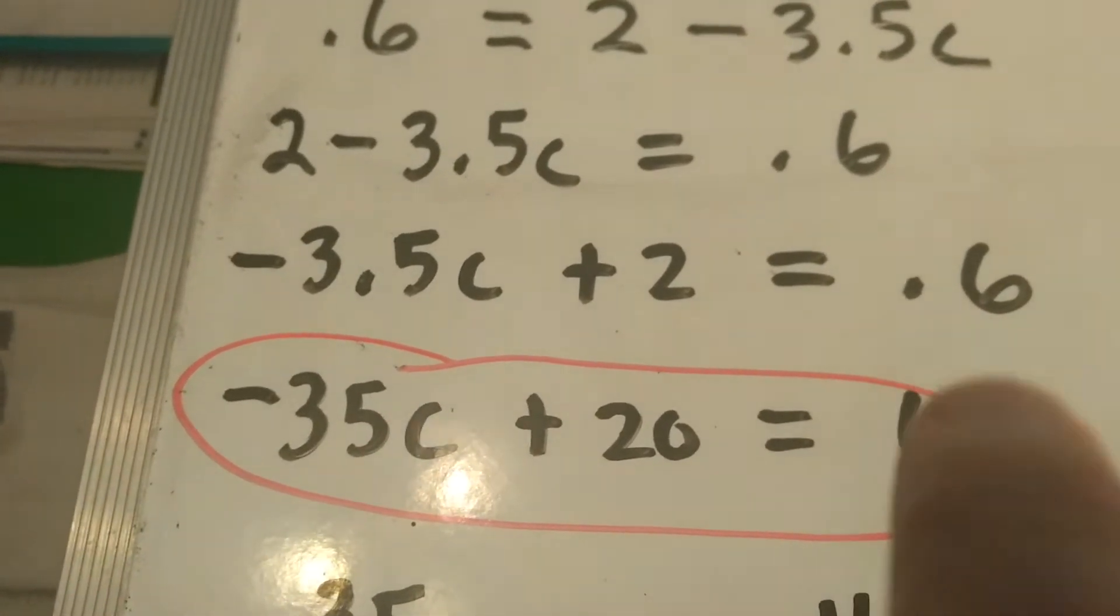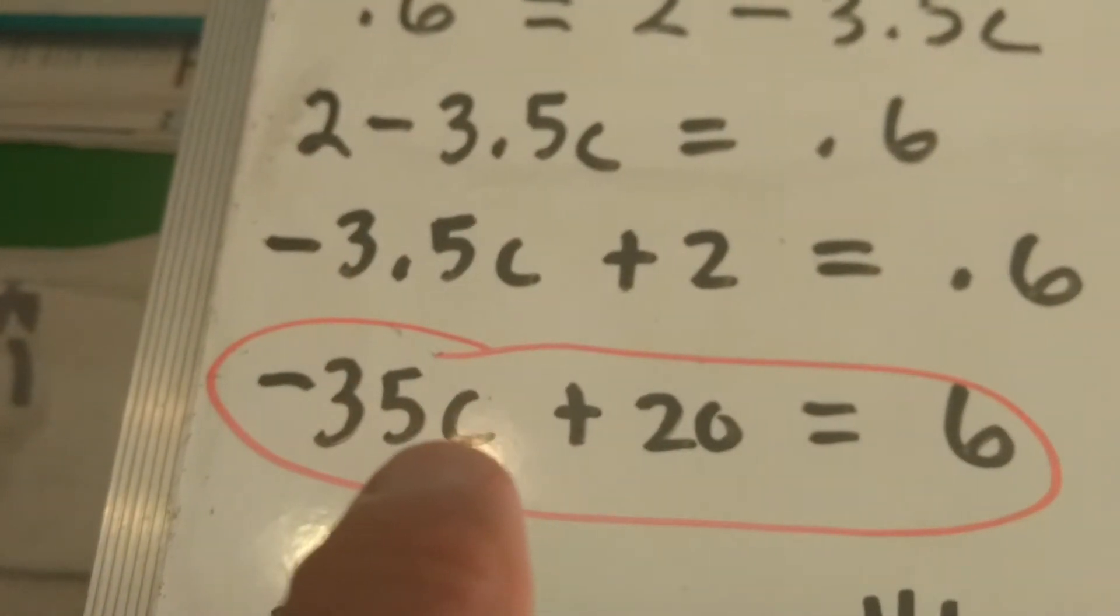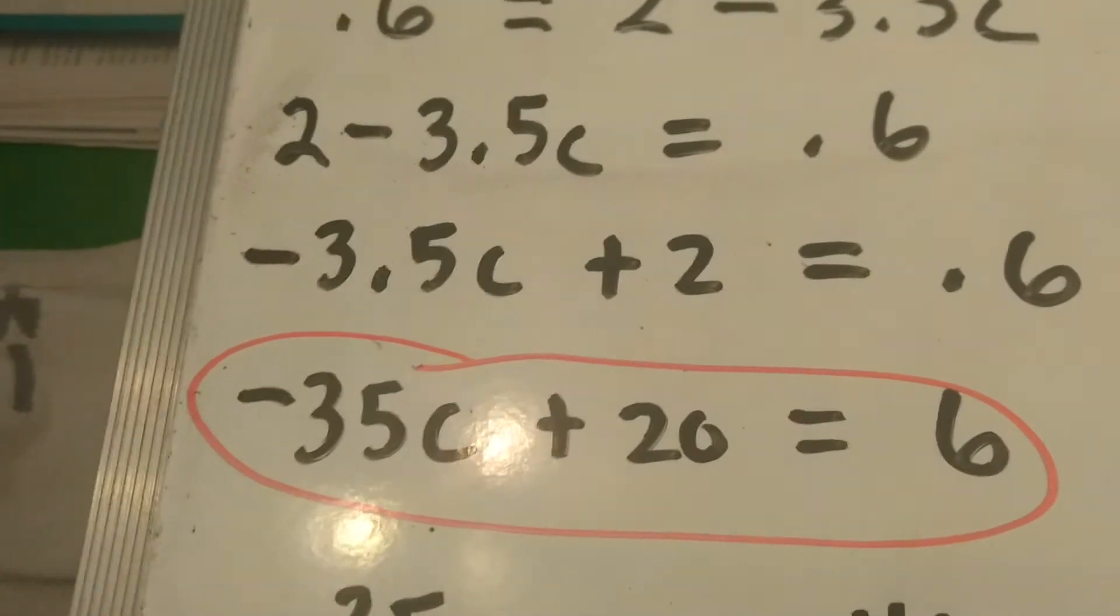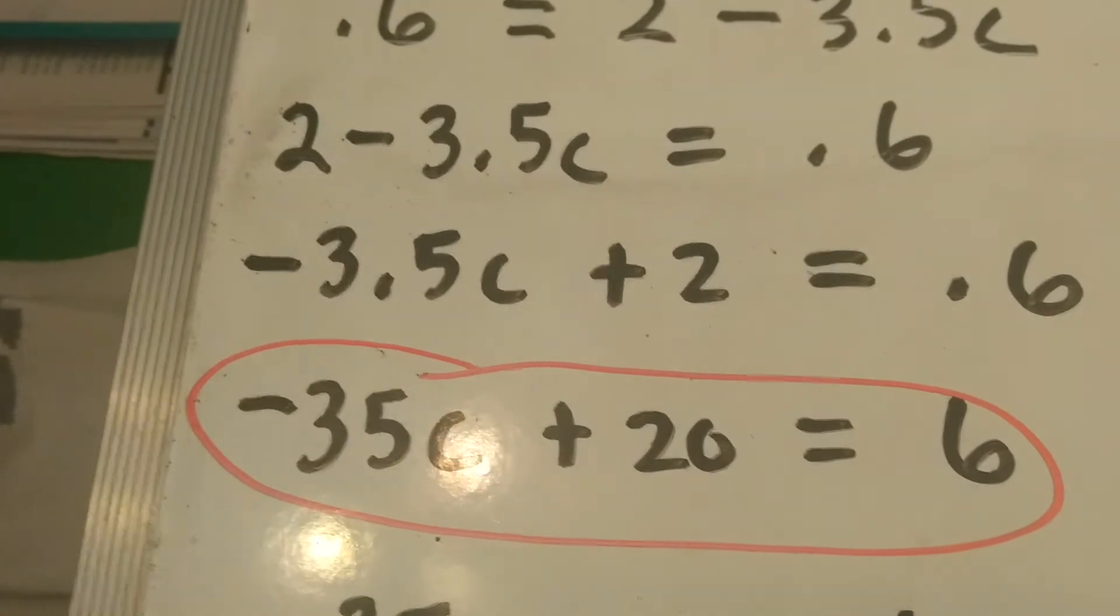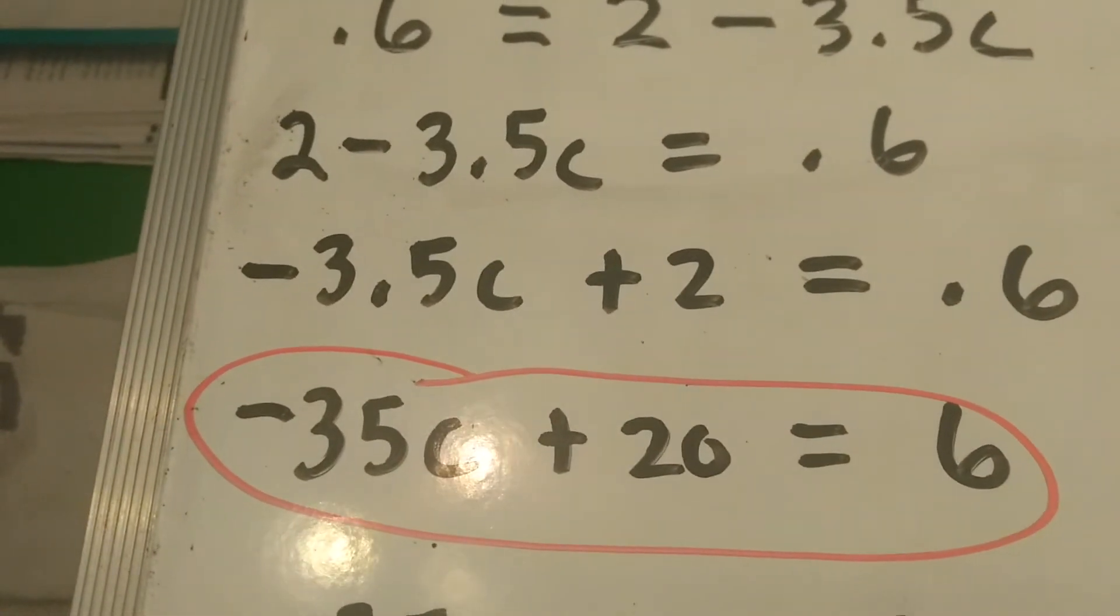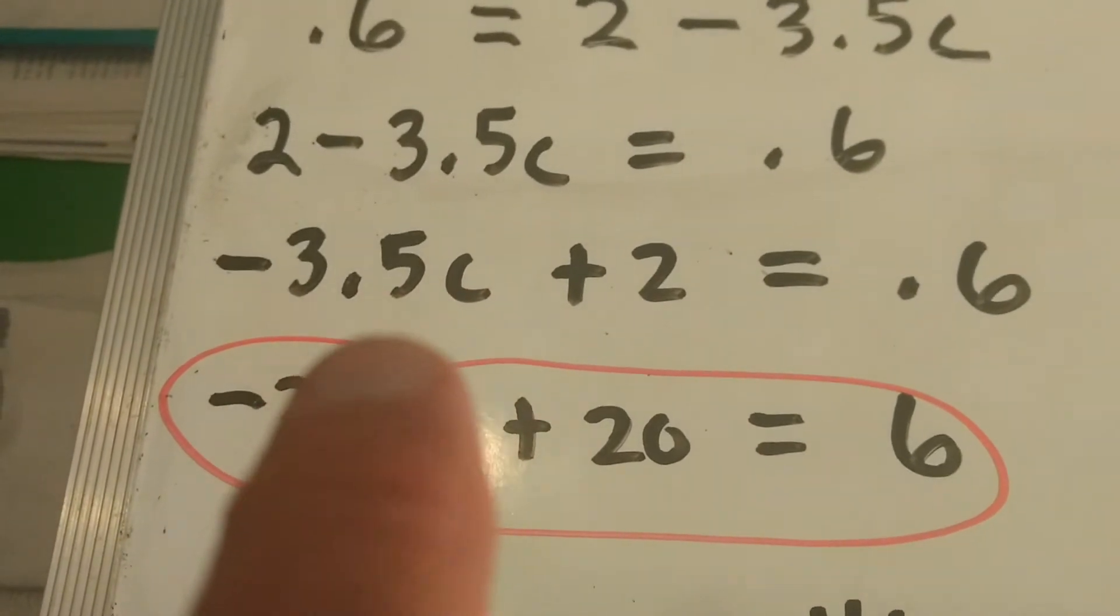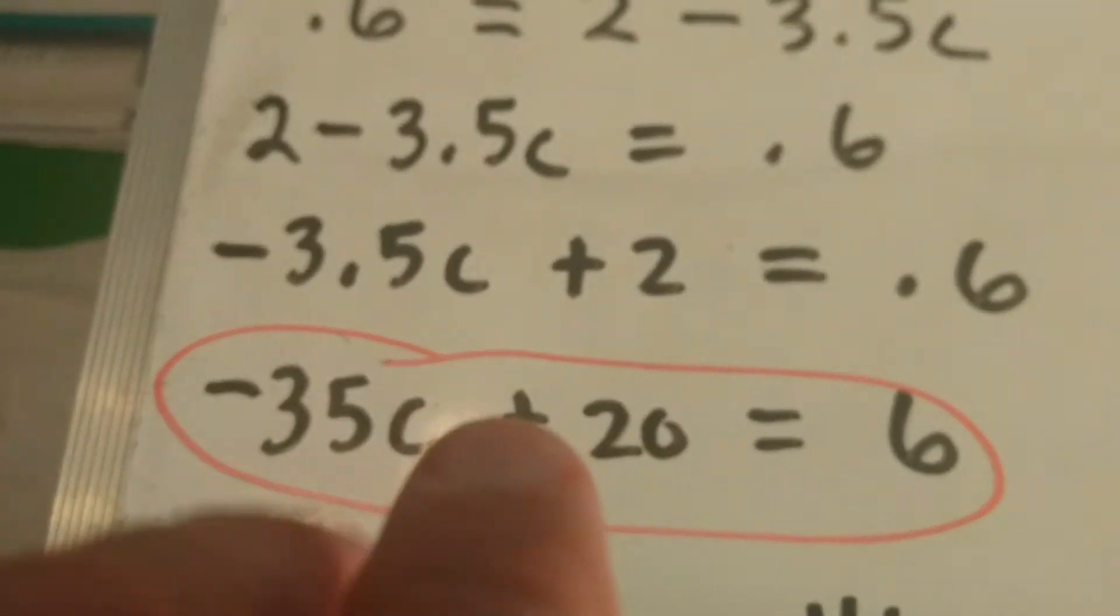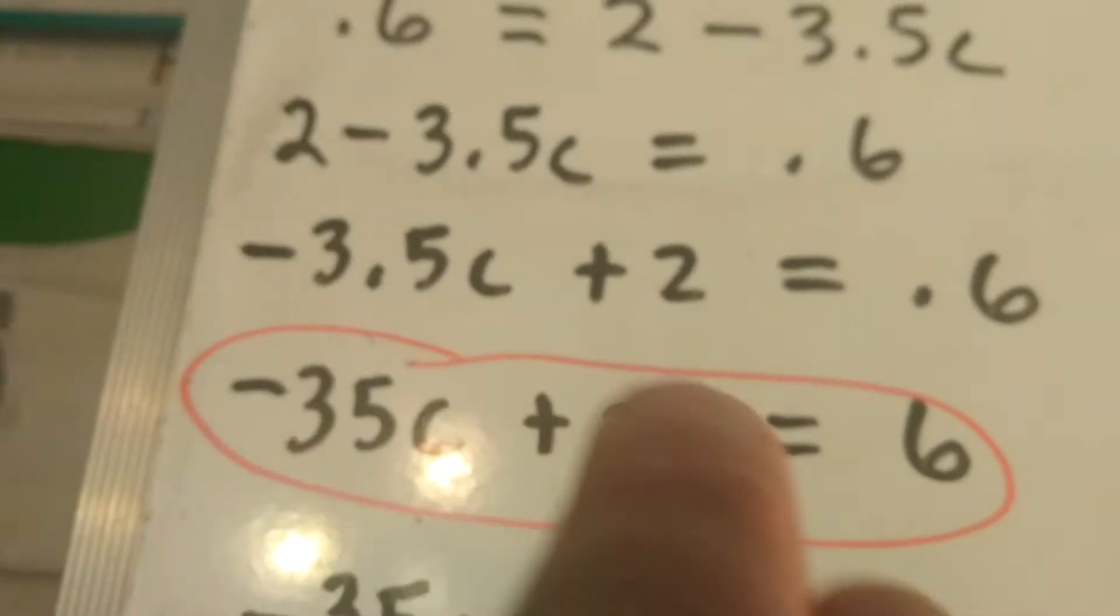So we're going to multiply this by 10, which gives us 6. This by 10, which gives us 20. This by 10, which gives us negative 35c. We can do anything we want to an algebraic equation, as long as we do it to both sides. That's the golden rule in algebra. Now, if one of these would have had two decimal places, like say this would have been a 0.52, we'd have had to multiply all of them by 100. So you're multiplying by the highest decimal place in terms of tens.